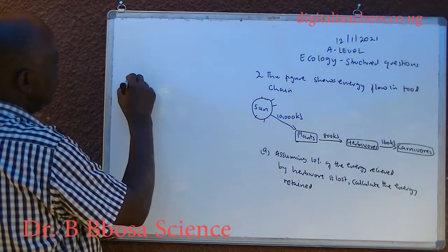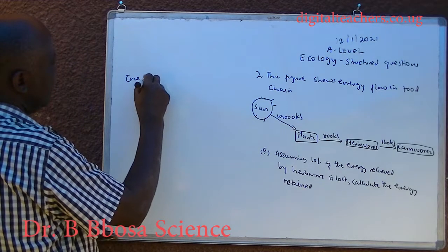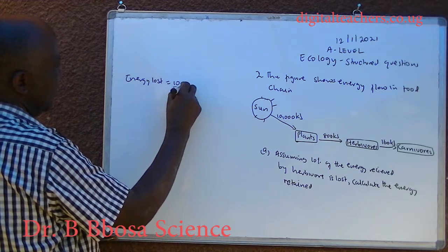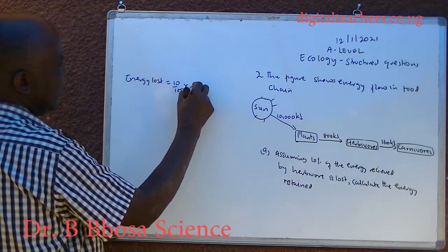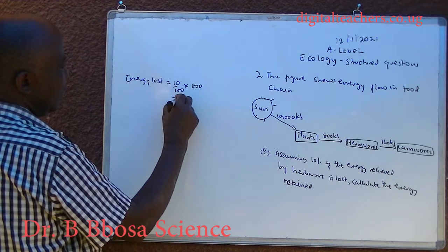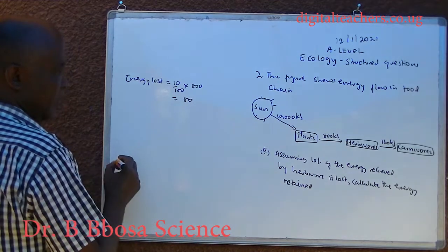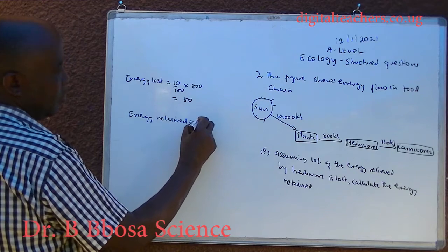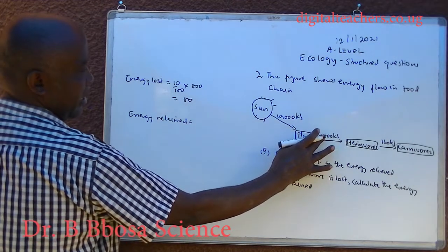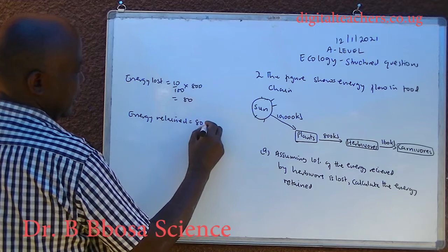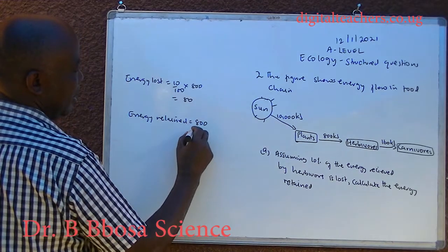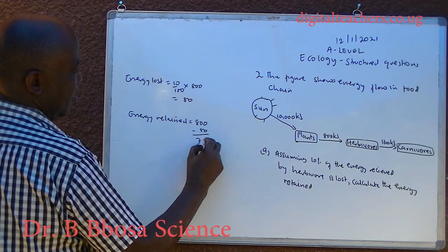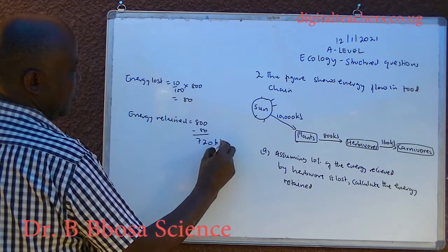Energy lost is equal to 10 over 100 times 800, which is equal to 80. Energy retained is equal to the energy received by herbivores, which is 800, minus 80, which is equal to 720 kilojoules.